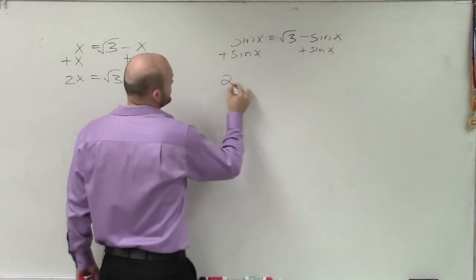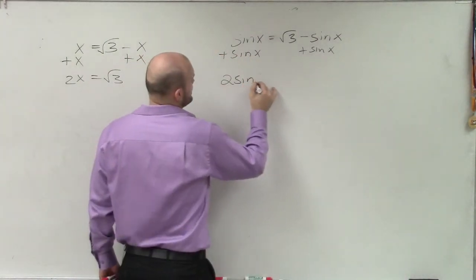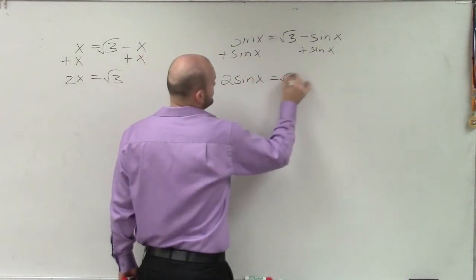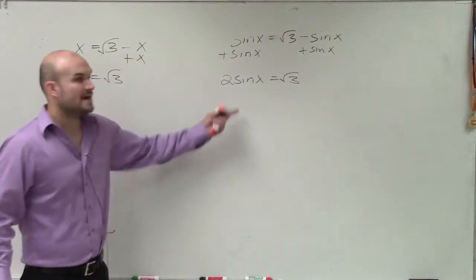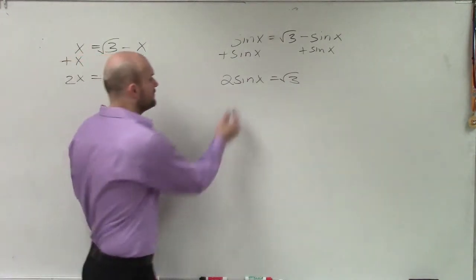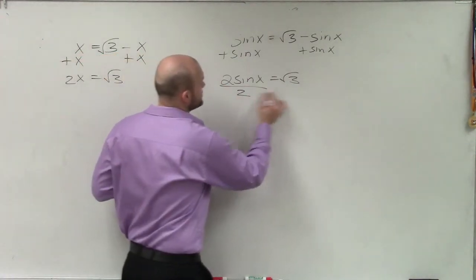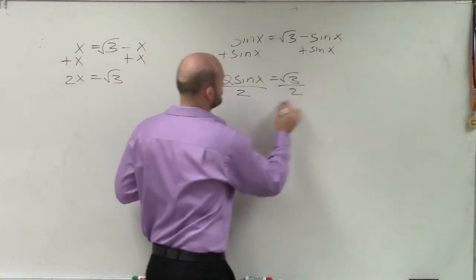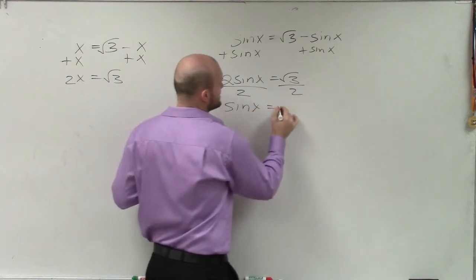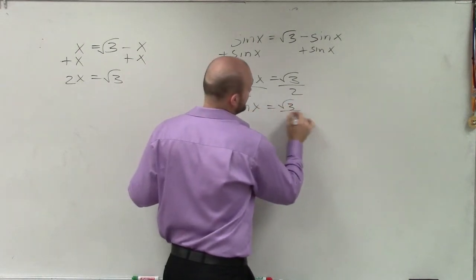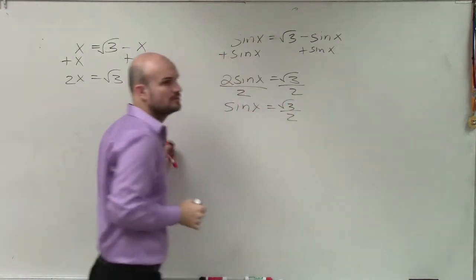So therefore, now I have 2 sine of x equals the square root of 3. To solve, I divide by 2. So I have sine of x equals the square root of 3 over 2.